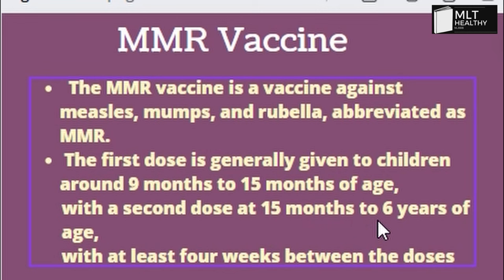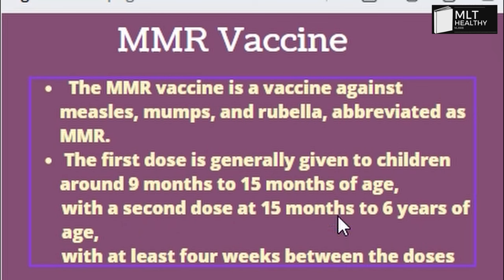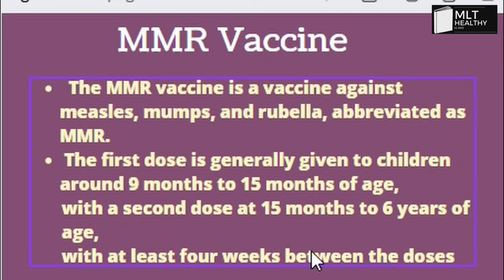MMR vaccine stands for measles, mumps, and rubella. The first dose is for children 9 to 15 months of age. The second dose is for 15 months to 6 years of age, with at least 4 weeks between doses. A third dose follows the same schedule.